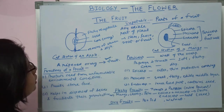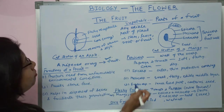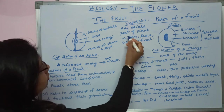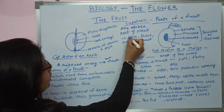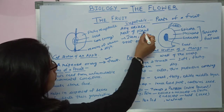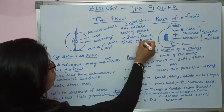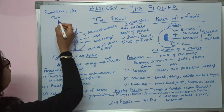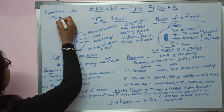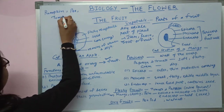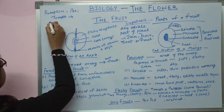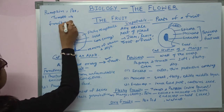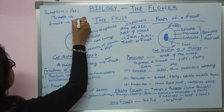How do vegetables form? Any edible part of a plant is a vegetable. You can get vegetables from stems, from leaves, from roots, or even as a fruit. Some vegetables like pumpkin, pea, and tomato are actually fruits, as these are ripe ovaries.